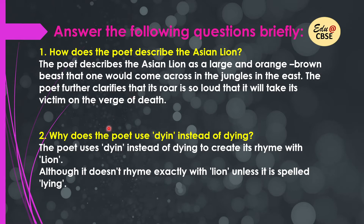Question number two: why does the poet use 'dying' instead of 'dying'? The poet uses 'dying' instead of 'dying' to create a rhyme with 'lion.' The pronunciation is not exactly the same — we pronounce L-I-O-N as 'lion,' so it would rhyme exactly only if spelled as 'lying.' But the poet deliberately changed it to build rhyme and rhythm.